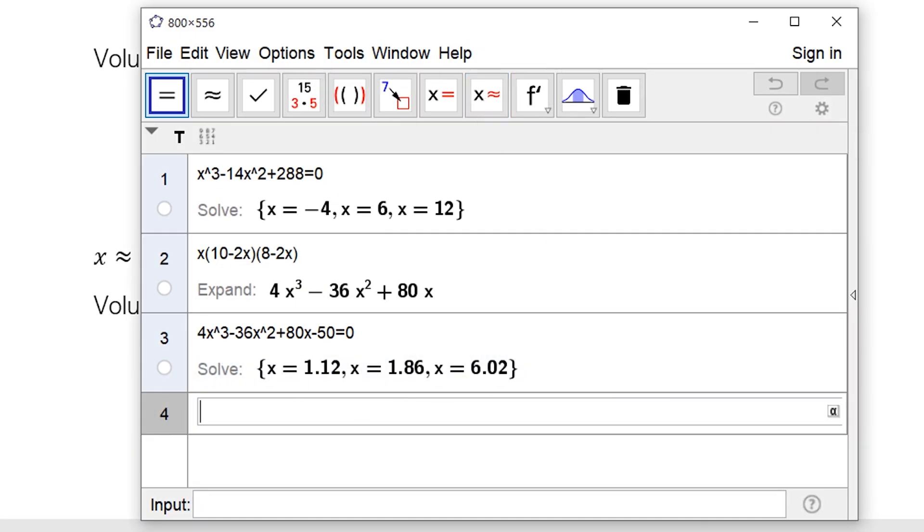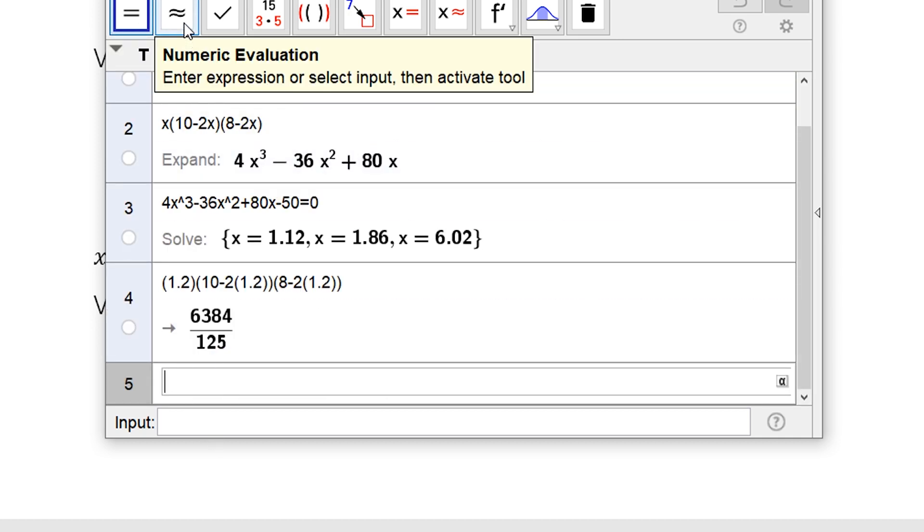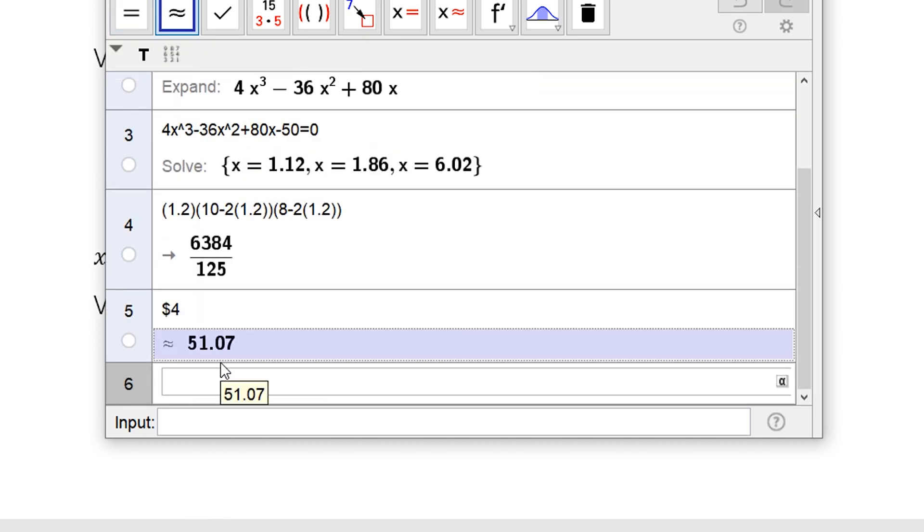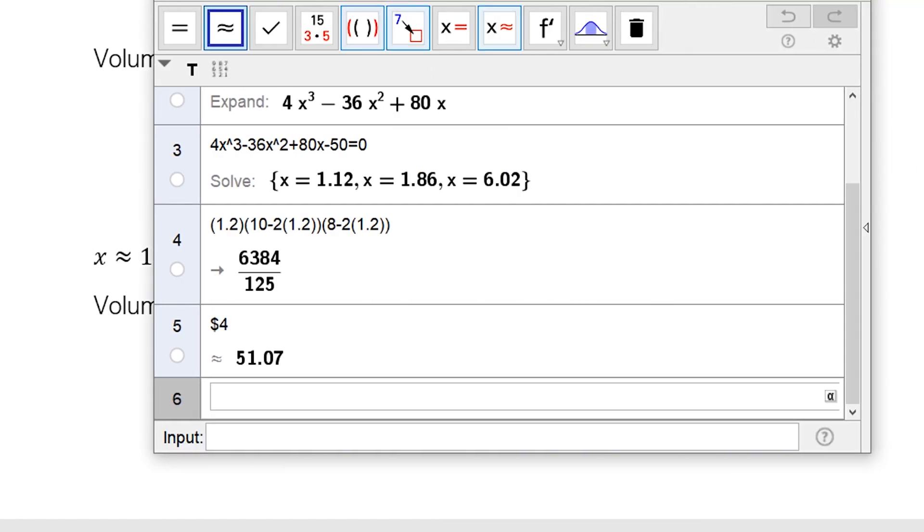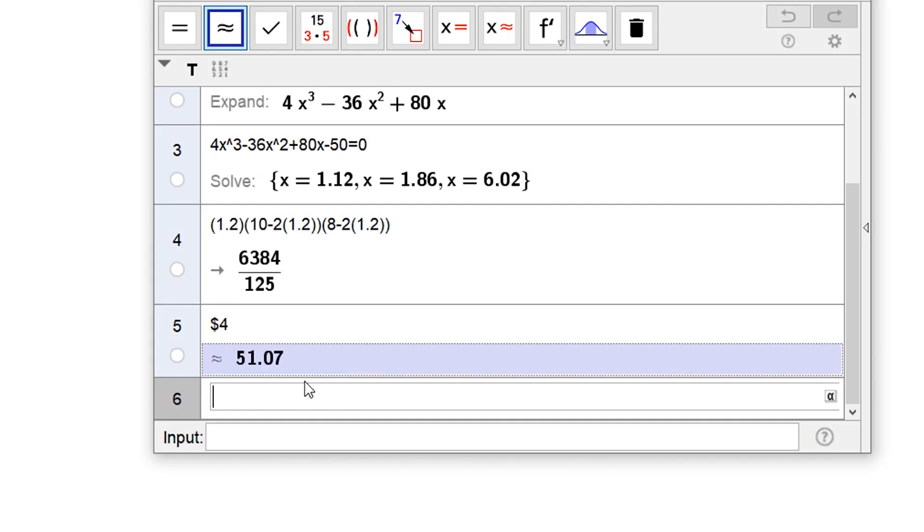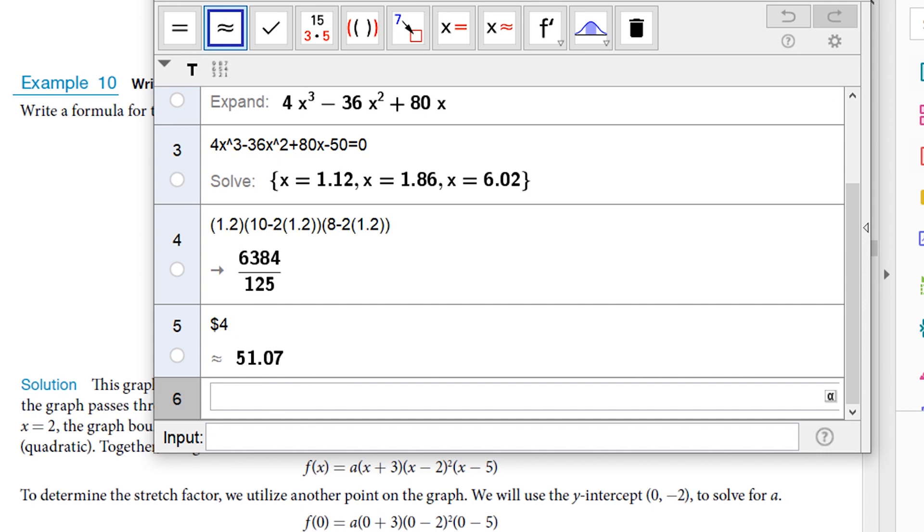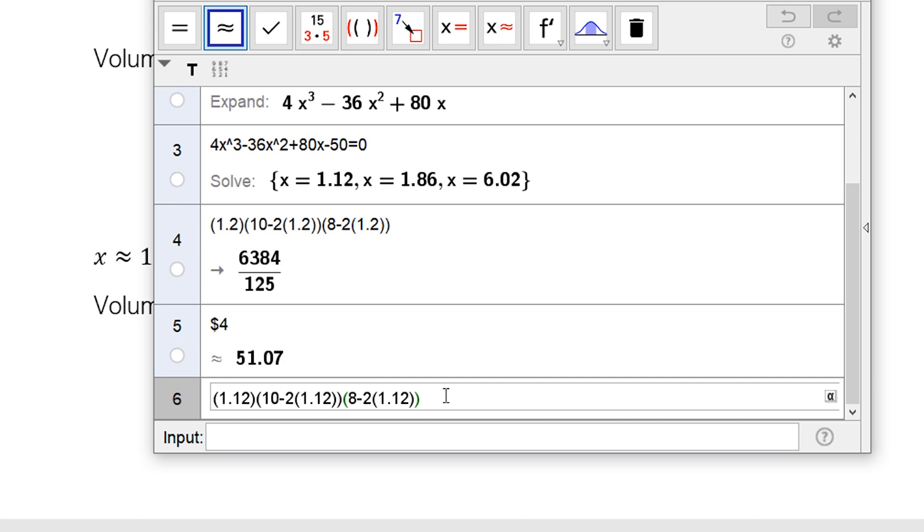Okay, let's get GeoGebra again. That's 51.07—too much. Oh, sorry, not 1.2, it should be 1.12. Let's copy this and paste it here. Okay, GeoGebra. Let's copy this and paste it here.